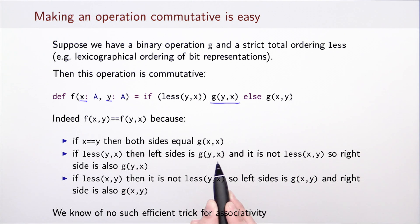Of course, when the two arguments are equal, then it doesn't matter whether we compute g(y,x) or g(x,y), the result is equal to, for example, g(x,x). And if we have that y is less than x in our ordering, then the left side is g(y,x) because we execute the true branch, whereas when we compute f(y,x), then we will execute the else branch, which will lead to exactly the same invocation of g. So regardless of what the value of g is, we will obtain the same value for f(y,x) and f(x,y). So there are some ways of patching functions to make them commutative, but we do not have such trick for associativity of functions.